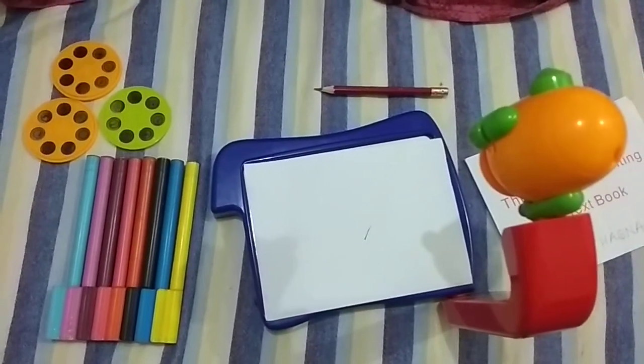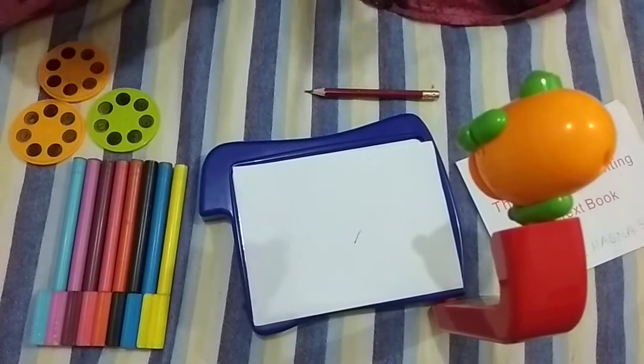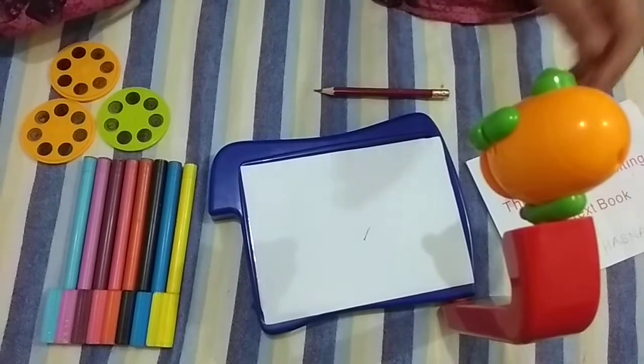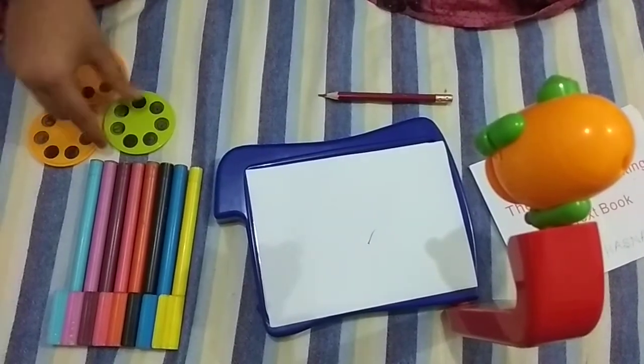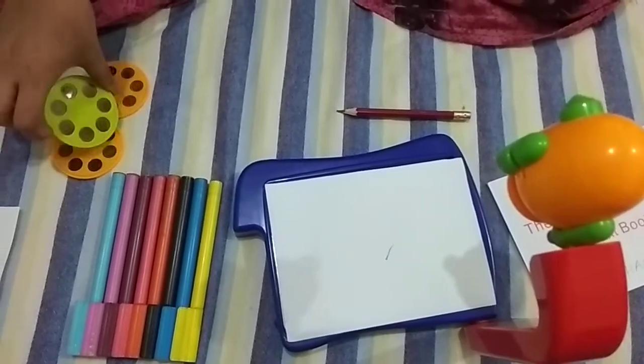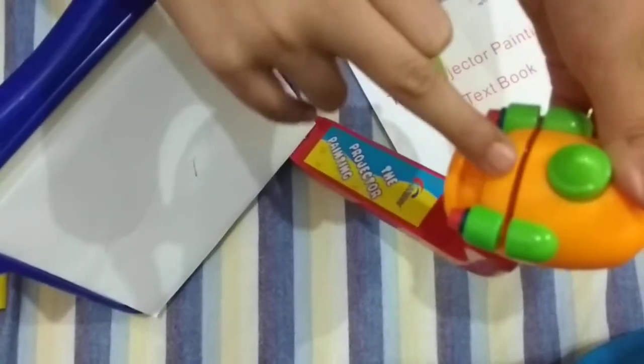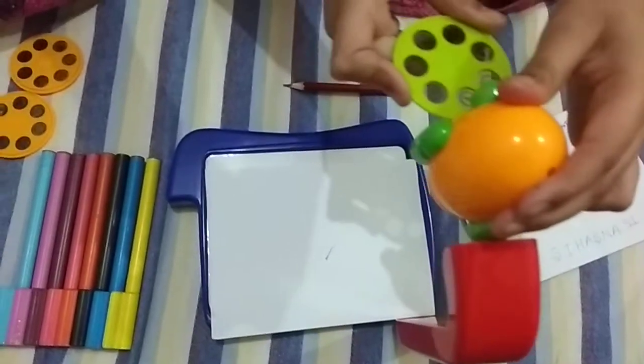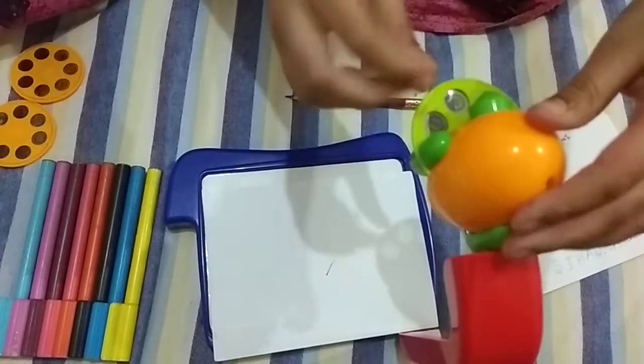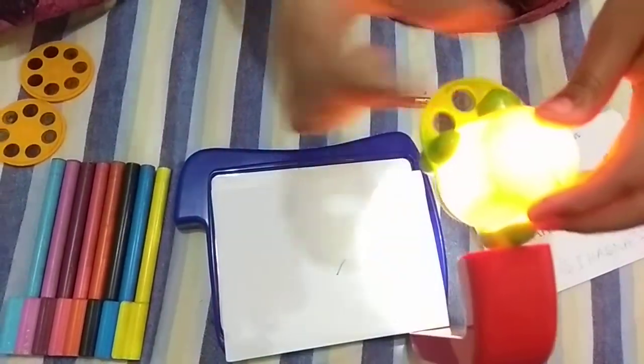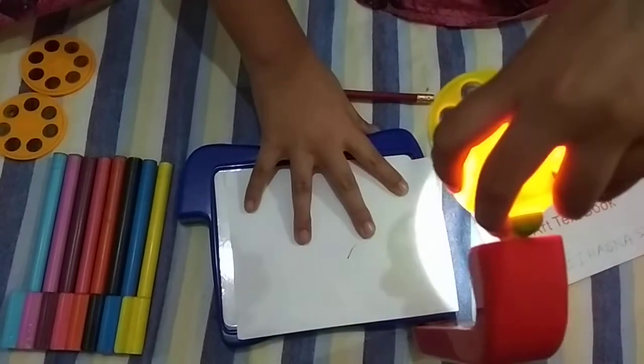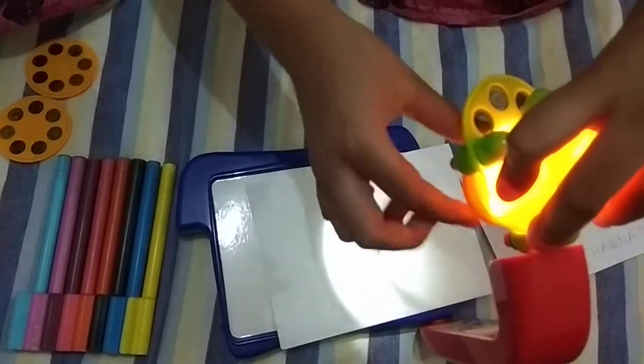Now let me show you how to draw using this. First you have to choose a slide. I'm gonna be choosing the green one and you have to insert it. It has a place where you insert it. Let's insert it guys. I'm gonna turn it on now. This is how you adjust it. I'm gonna be adjusting it now.